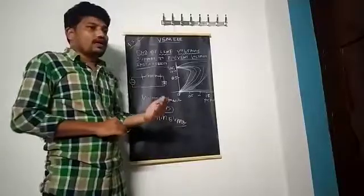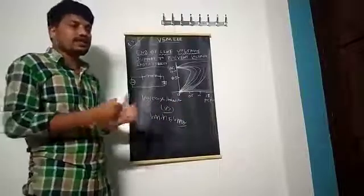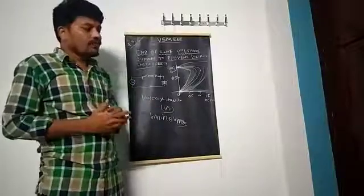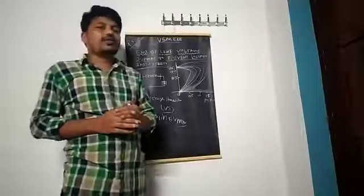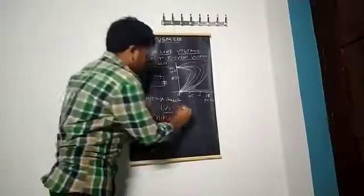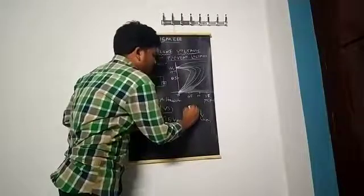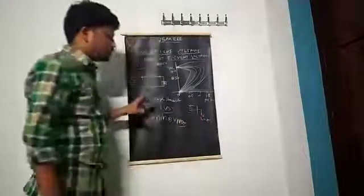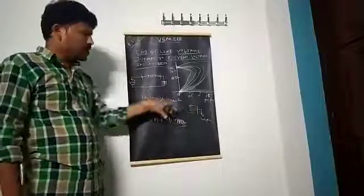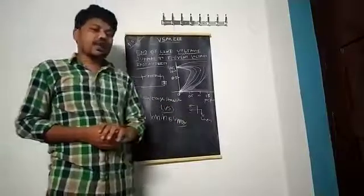There are several causes which lead to voltage instability: loss of some generation, sudden transformer tap changes, and some disconnections. For example, let us consider one load which receives power from two generators — generator 1 and generator 2. Suppose a problem occurs and generator 2 fails.